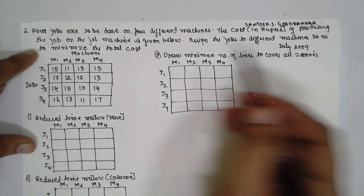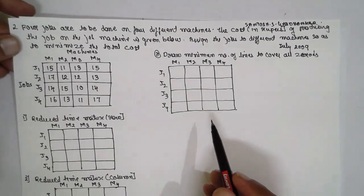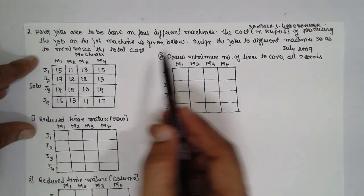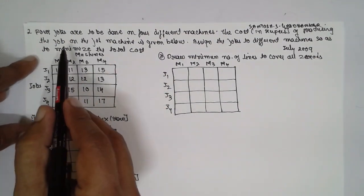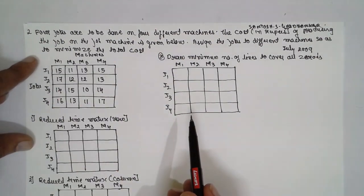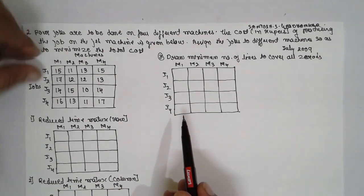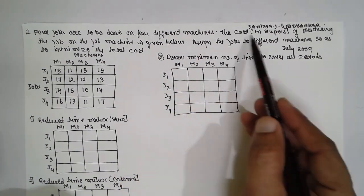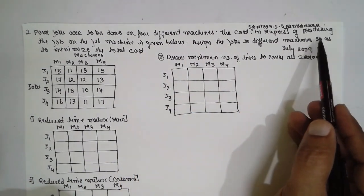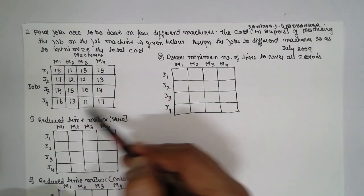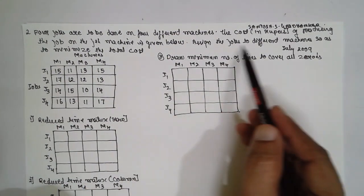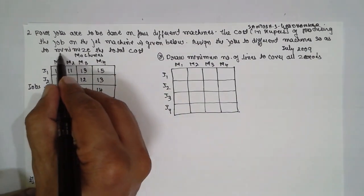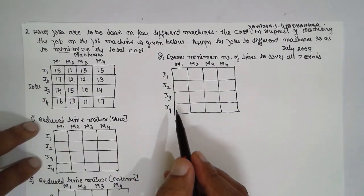Today I am teaching you operation research — specifically the assignment problem using the Hungarian method. We are using the minimum cost optimizing technique. Four jobs are to be done on four different machines. The cost in terms of rupees of producing each job on each machine is given. The objective is to assign jobs to machines so as to minimize the total cost.